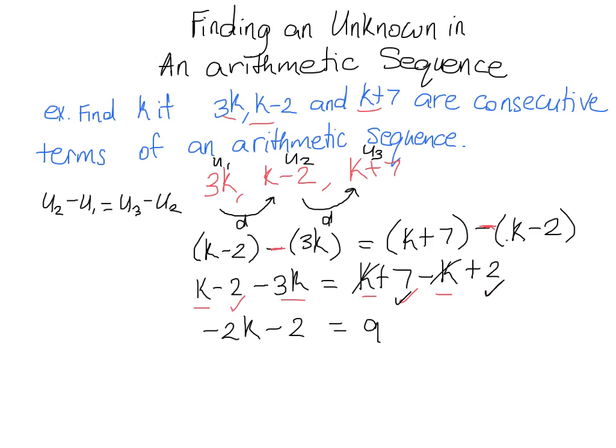So let's get our numbers over to the right, the k's can stay to the left, so we can add 2 to both sides. And we get that negative 2k is equal to 11.